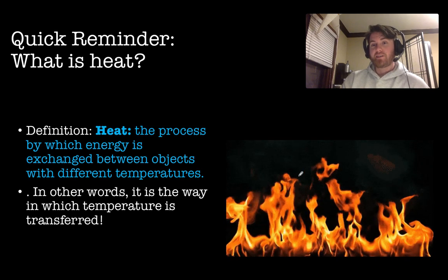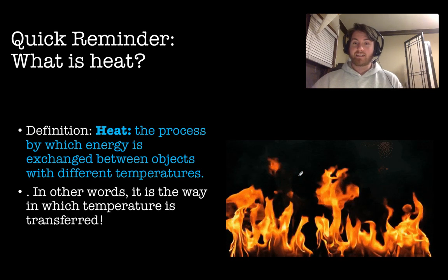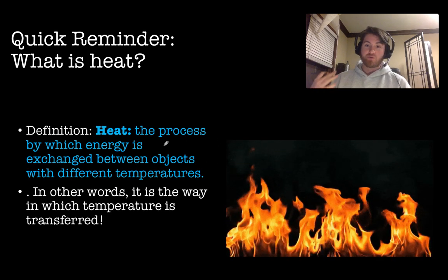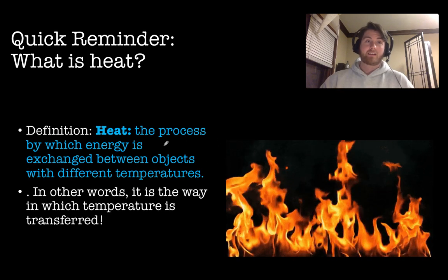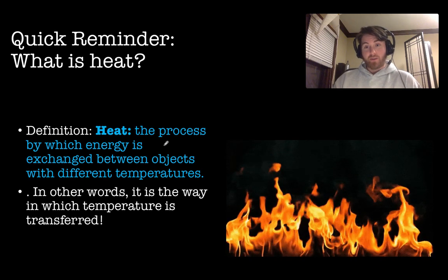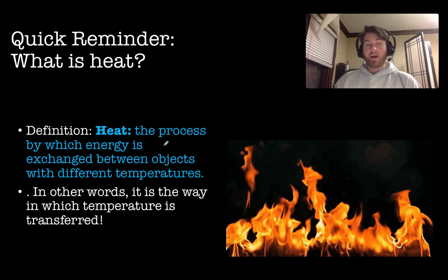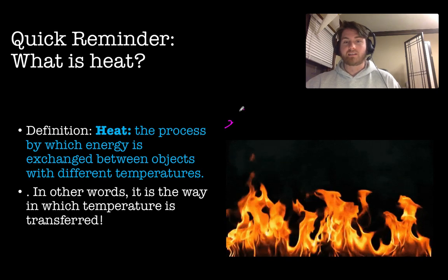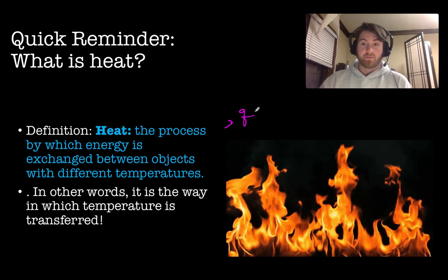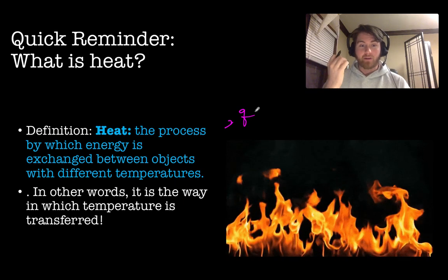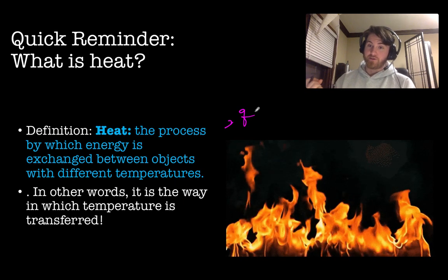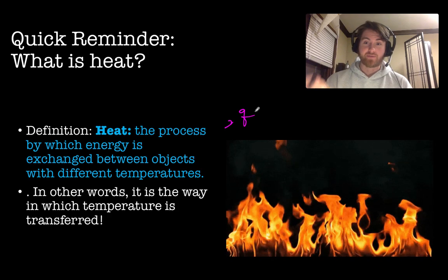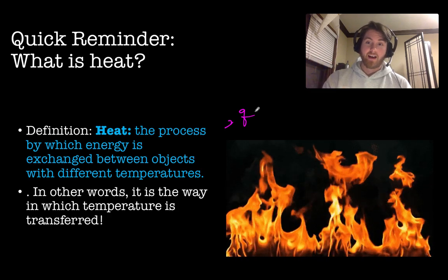Let's review our definition for heat. Heat is the process in which energy is exchanged between objects or entities of different temperatures. We always represent heat by the letter Q in physics — it's a form of energy, specifically the way in which temperature is transferred between objects.